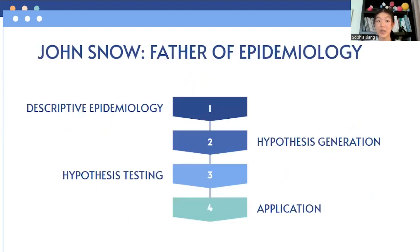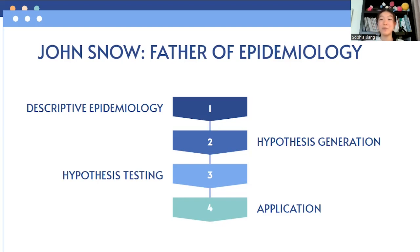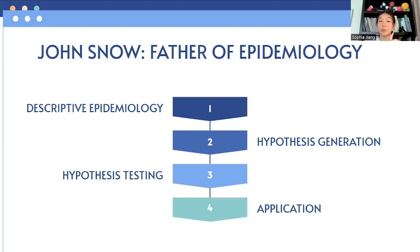Next, we're going to talk about John Snow. John Snow is a particularly important person, and you'll probably hear him referred to as the father of modern epidemiology, or father of field epidemiology, because he really is the figure who started it all. Everyone before him made contributions, but they hadn't really put together the steps of epidemiology. The basic steps that John Snow outlined were: one, descriptive epidemiology; two, hypothesis generation; three, hypothesis testing; and four, application.